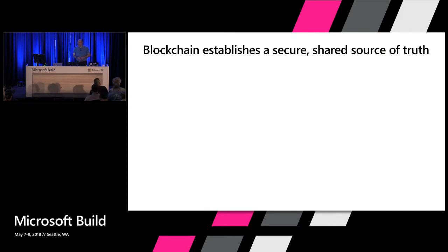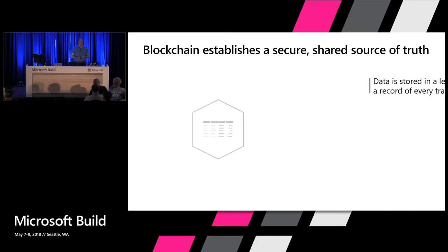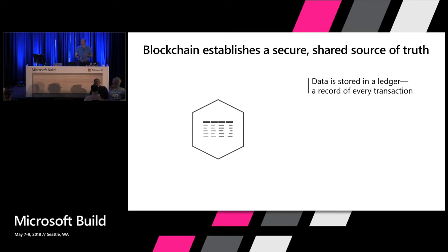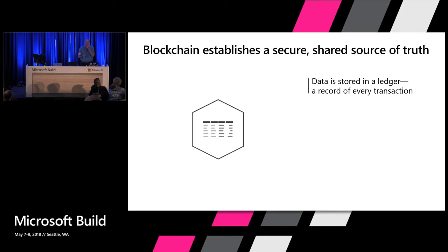Blockchain is a technology that enables you to share business processes and data across a large number of counterparties who don't trust each other. It consists of an abstraction which is a ledger. If you've ever read an illustrated book from the time of Charles Dickens, you might have seen a picture of a clerk with a quill scribbling in a big leather-bound book with a green visor and some armbands by candlelight. That clerk was probably writing in a ledger.